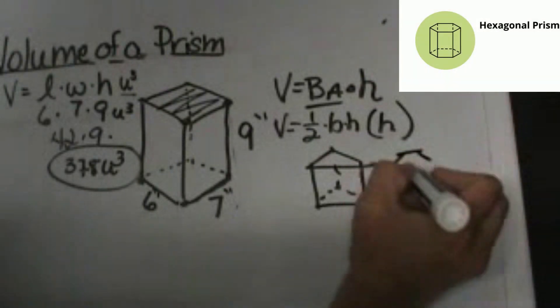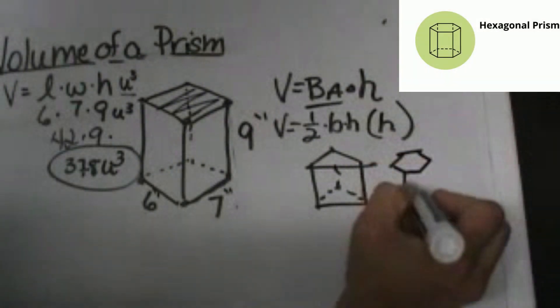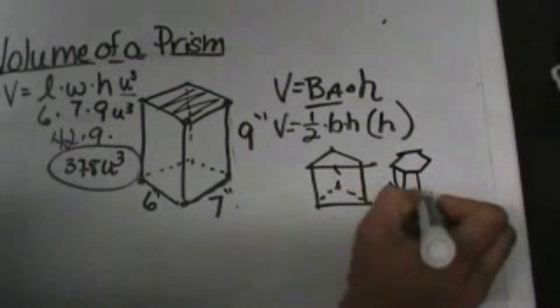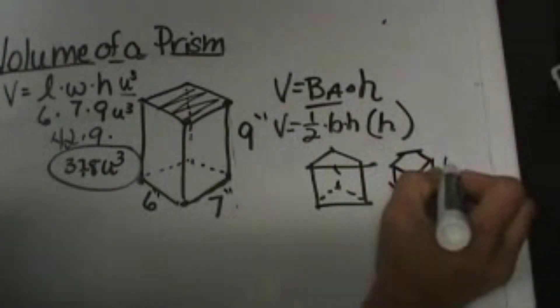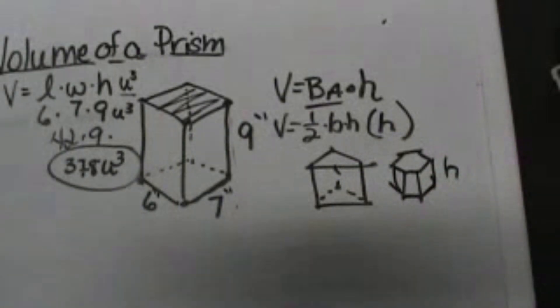You find the area of the hexagon and then multiply it times the height, and that's how you find it.